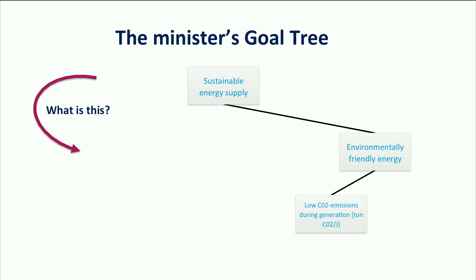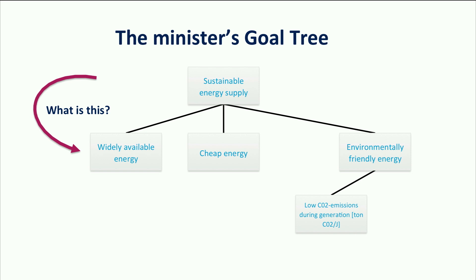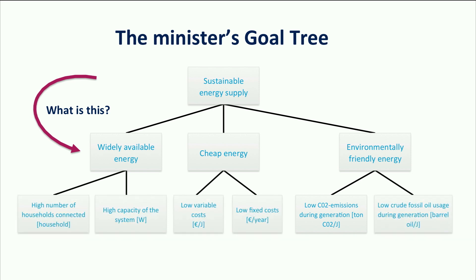For example, we ask: what is sustainable energy supply? A possible answer could be widely available and cheap energy. These sub-goals are added to the tree and by asking 'what is this?' again, these sub-goals can be further specified. All goals in the bottom layer of the goal tree can be used in a later stage as criteria to measure the effects of each alternative we want to consider.